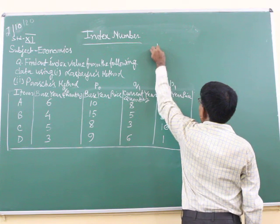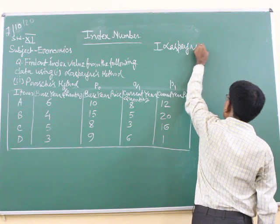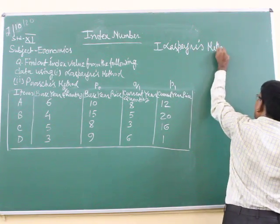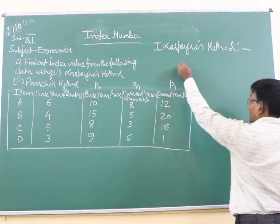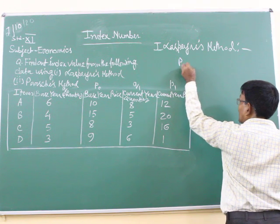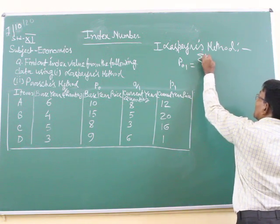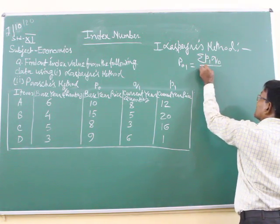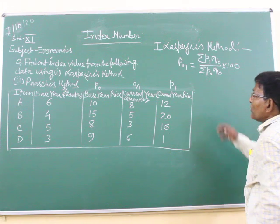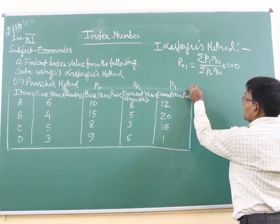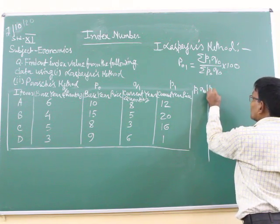Using Laspeyres method, with the help of formula, we will be able to calculate. It is P01 equals sigma P1Q0 by sigma P0Q0 into 100. So how many columns we have to take? Two columns. One is P1Q0, another is P0Q0.